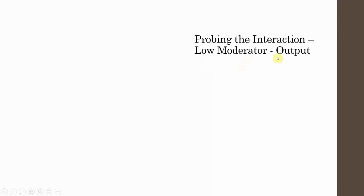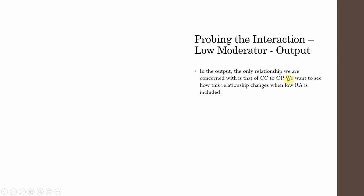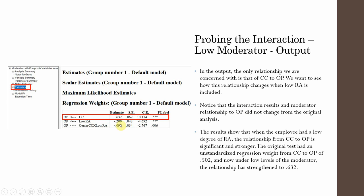When probing the interaction at low moderator level, we are only concerned with the CC to OP relationship. The interaction results and the moderator's relationship to OP did not change from the original analysis. The results show that when role ambiguity is low, the relationship is significant and stronger — the original estimate was 0.502, and under low RA this strengthens to 0.632.